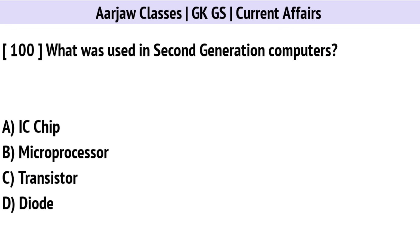What was used in second generation computers? The correct option is C: Transistor.